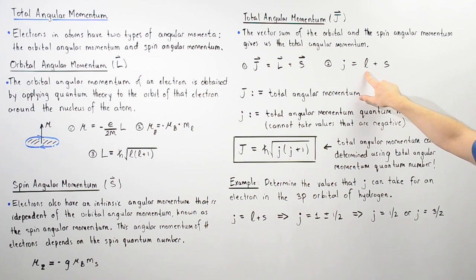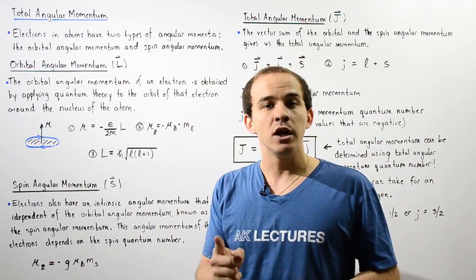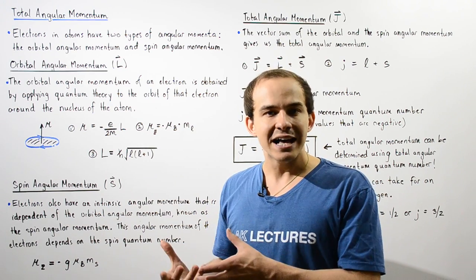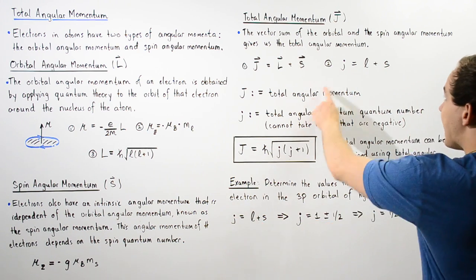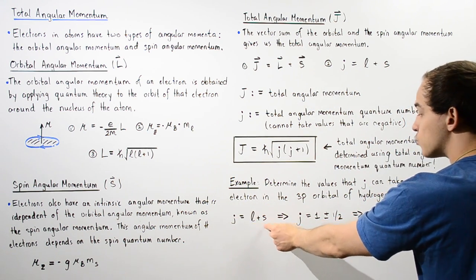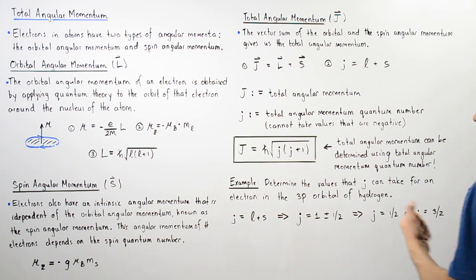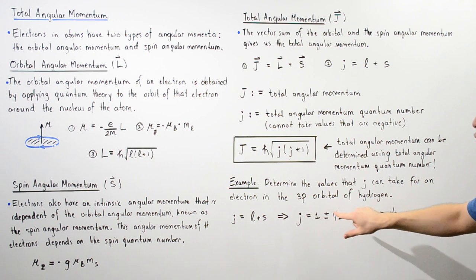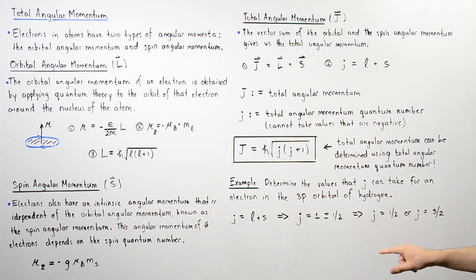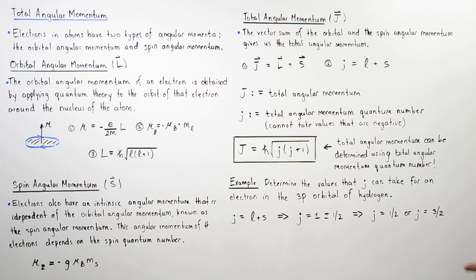So in this equation L is equal to 1. Remember, the electron spin of any electron can take one of two values: either positive one-half or negative one-half. Using equation two, j equals L plus S, where L is 1 and S is either positive or negative one-half. So j equals 1 plus or minus one-half. If we use the positive, j equals 3/2. If we use the negative, j equals 1/2.